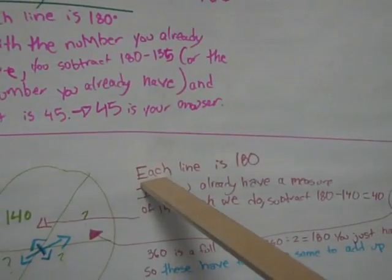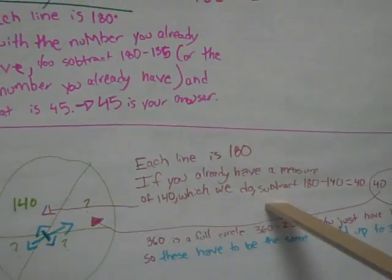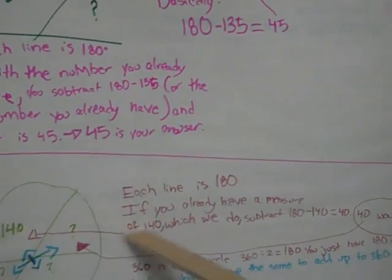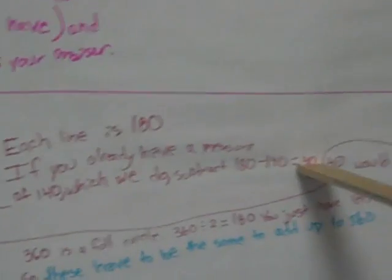Okay, number 2. Each line is 180, as I told you in problem 1. If you already have a measure, which we do, 140, subtract 180 minus 140. That is 40.